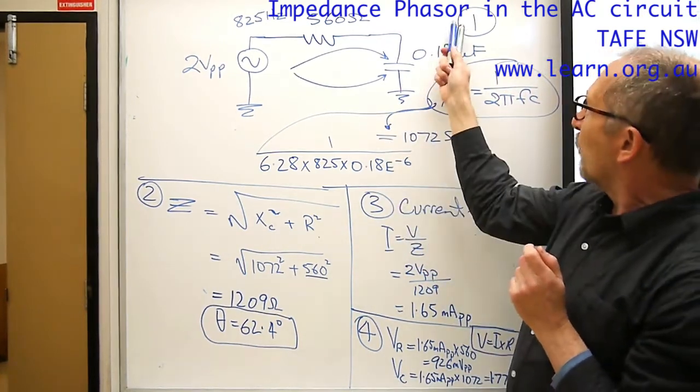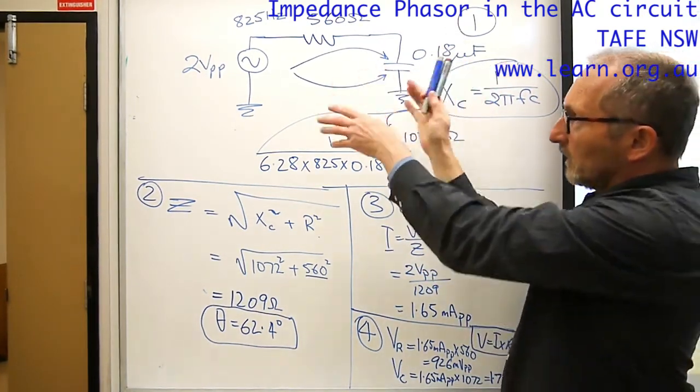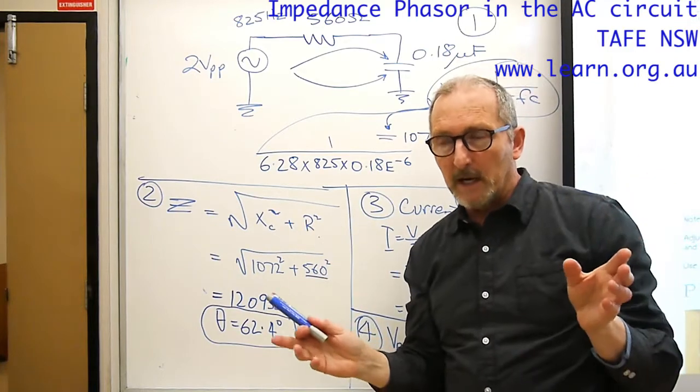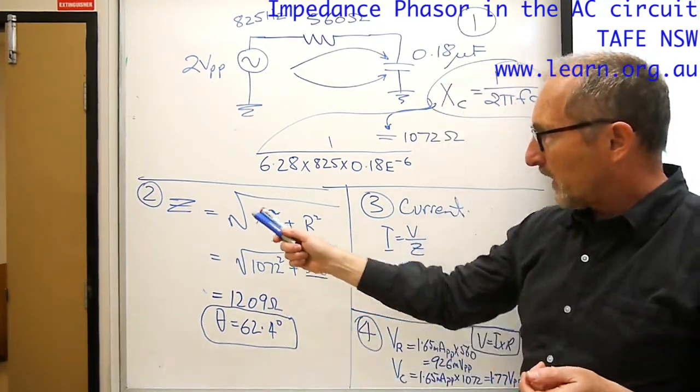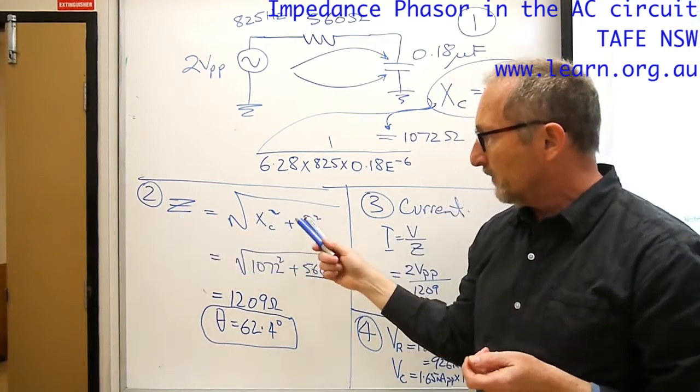Point number 1 I've said that in a circuit like this we always have to work out the capacitive reactance first, and then second we have to work out the impedance.